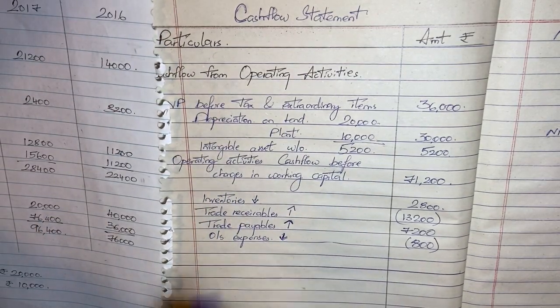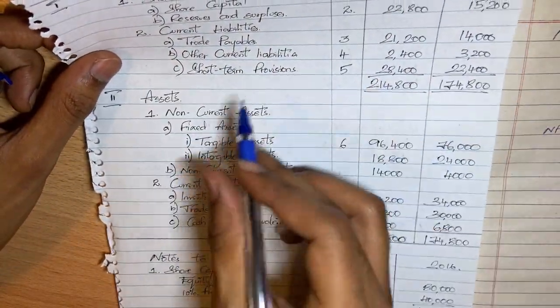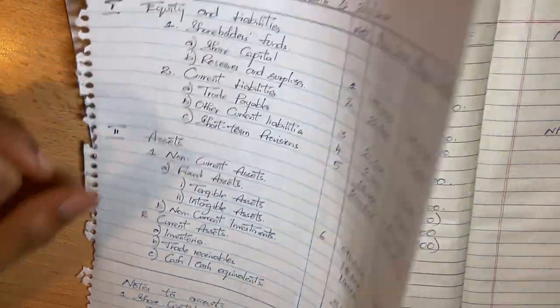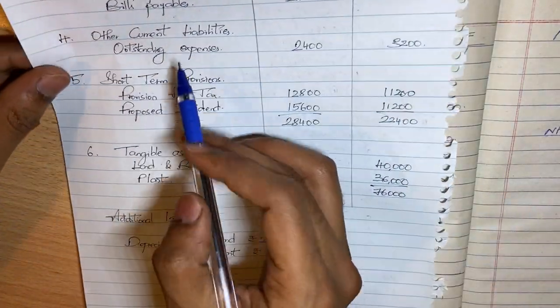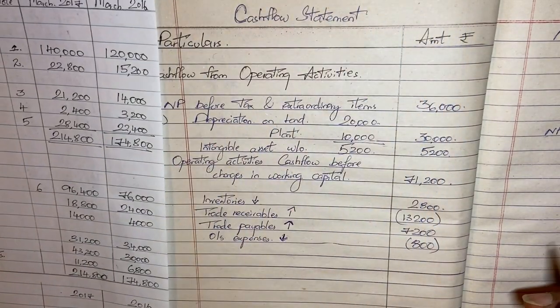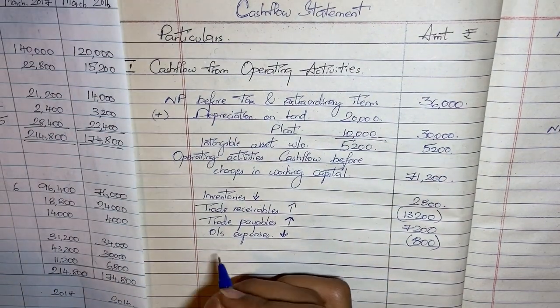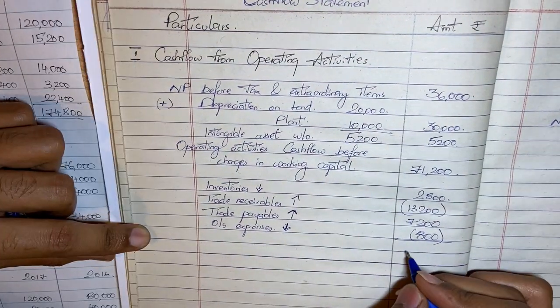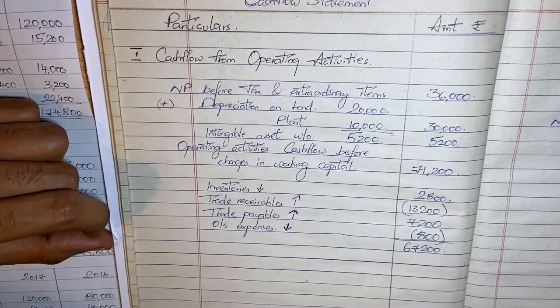Short-term provisions have already been considered, so we don't need to worry about that again. Everything else in working capital has been taken care of. After adjusting all working capital changes, the figure we get is 67,200.